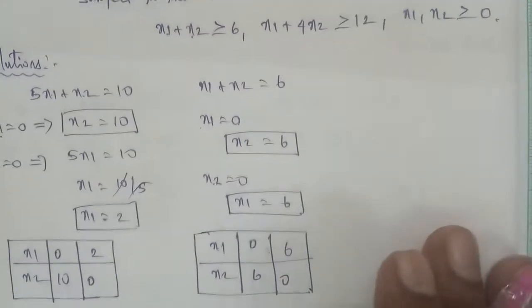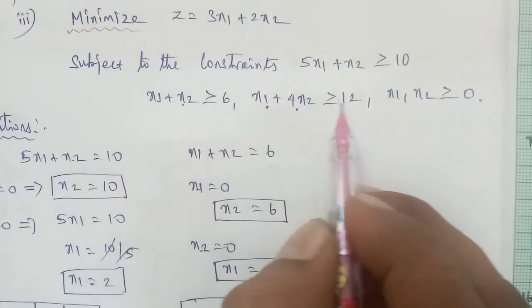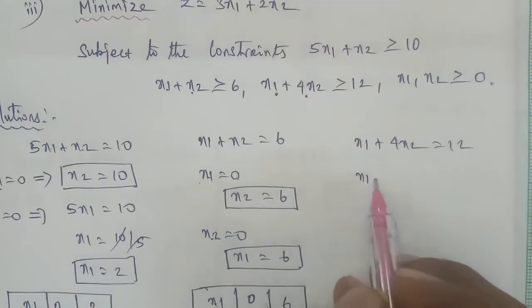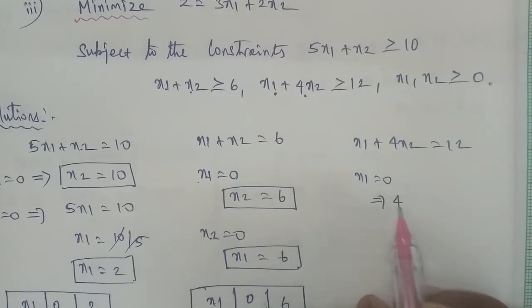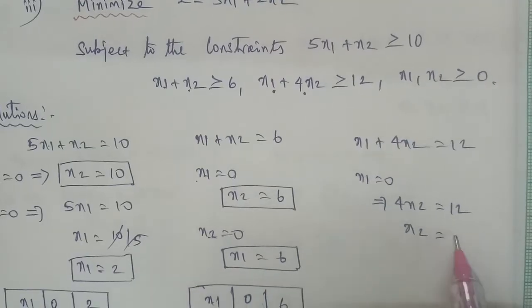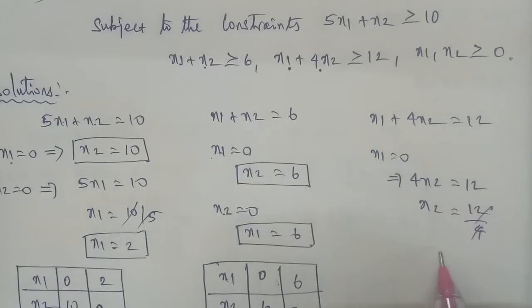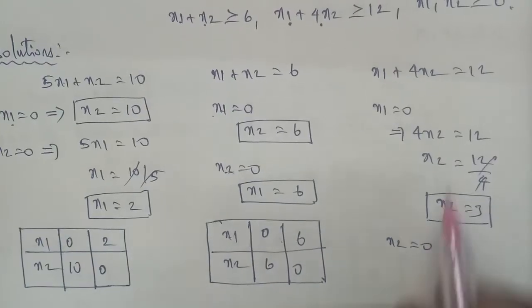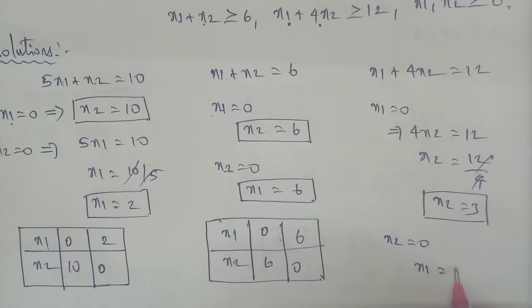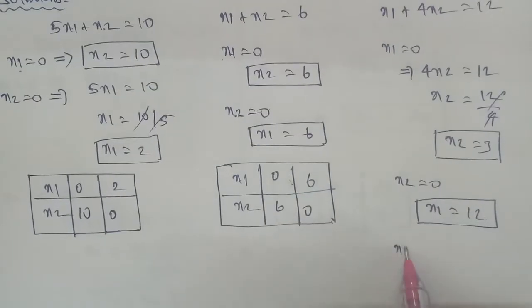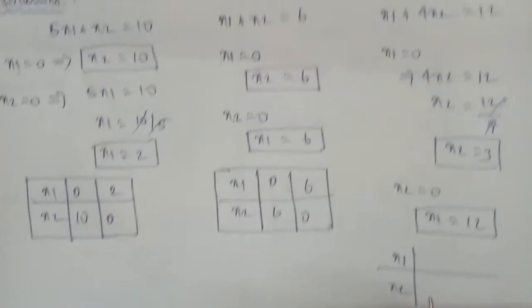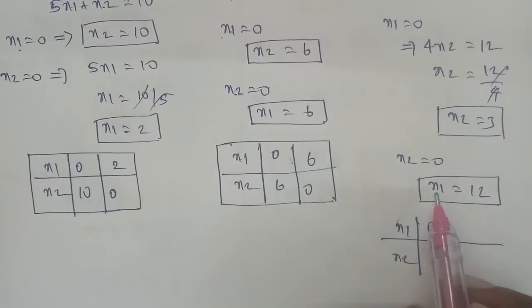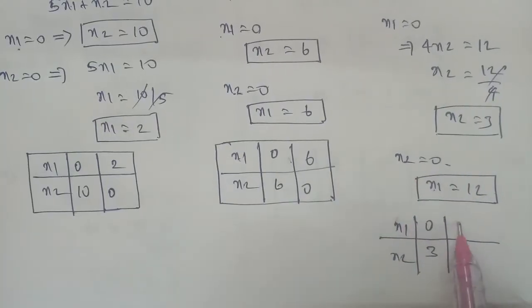The last equation is x1 plus 4x2 equal to 12. When x1 is equal to 0, x2 is equal to 12 divided by 4, which simplifies to x2 equal to 3, giving point (0,3). When x2 is equal to 0, x1 is equal to 12, giving point (12,0). We create this table for x1 and x2.